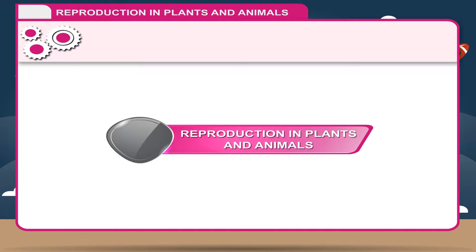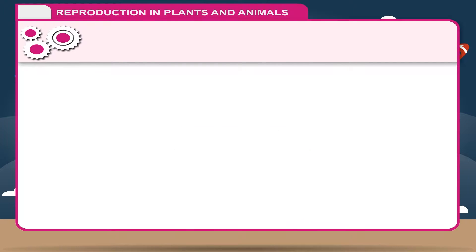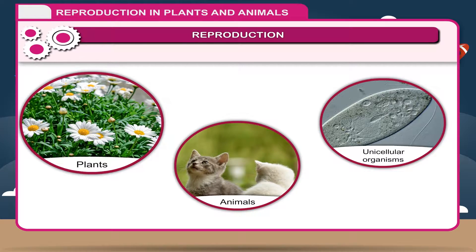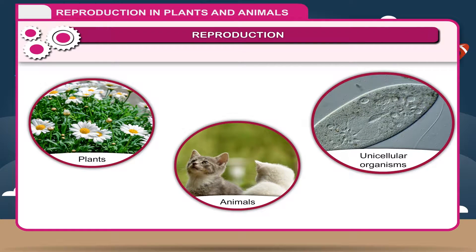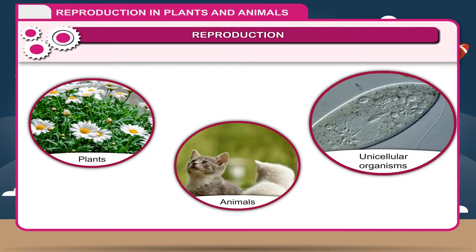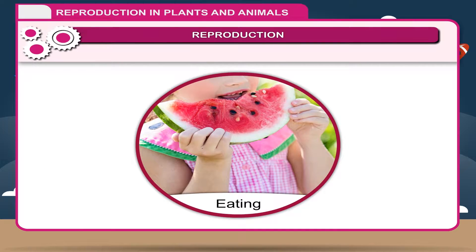Reproduction in Plants and Animals. Reproduction is the essential function of living organisms — plants, animals and unicellular organisms — for the continuity of their species. It is as important as eating is for the survival of an individual.